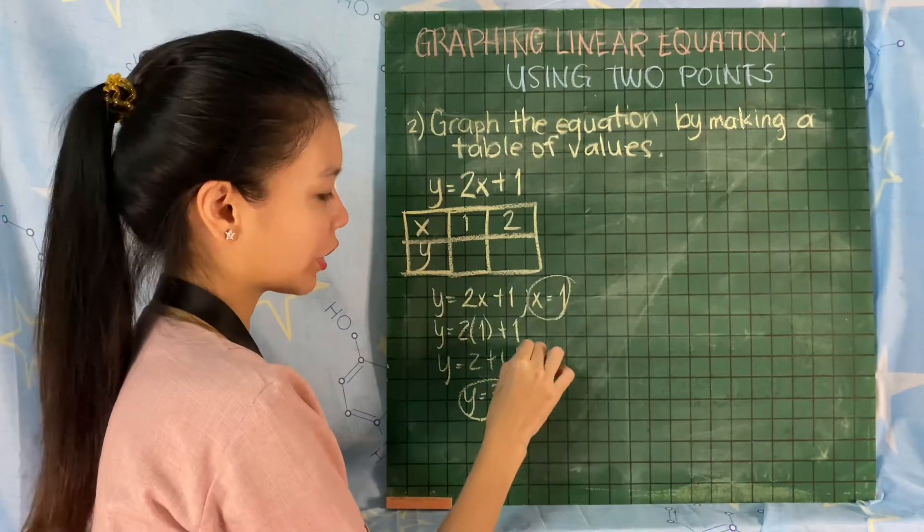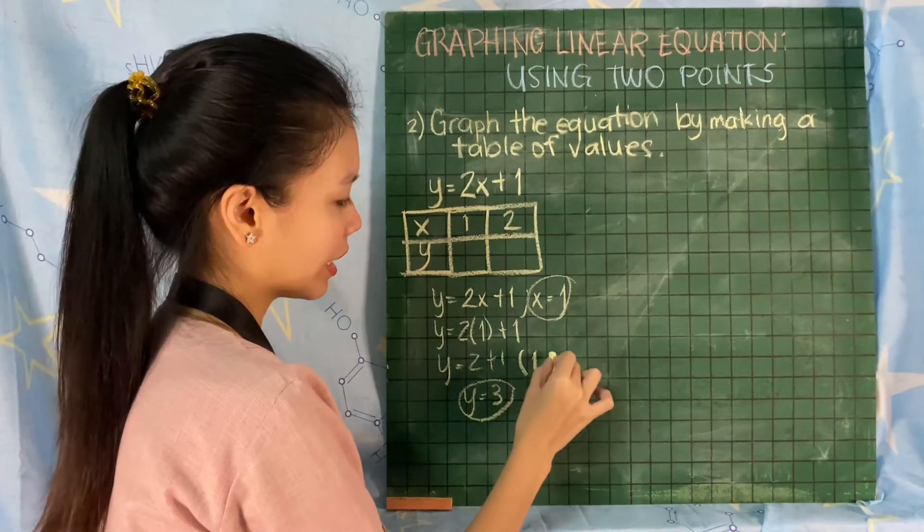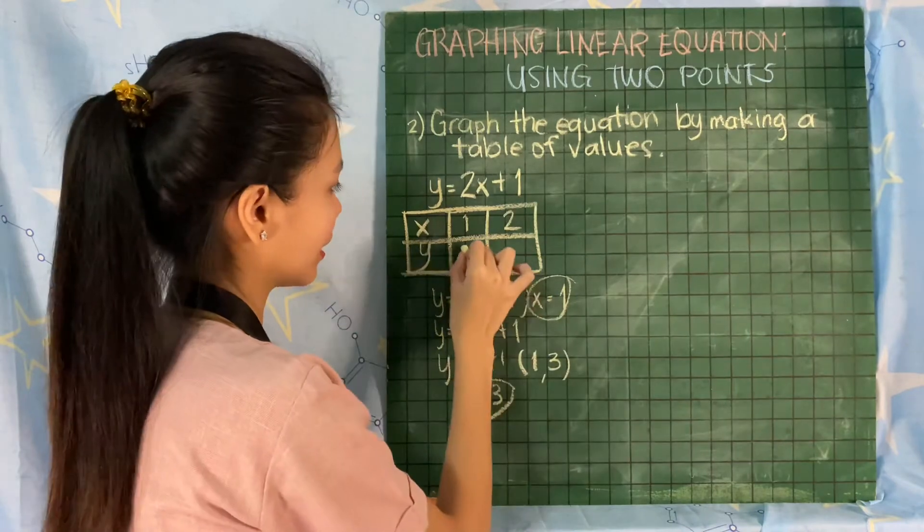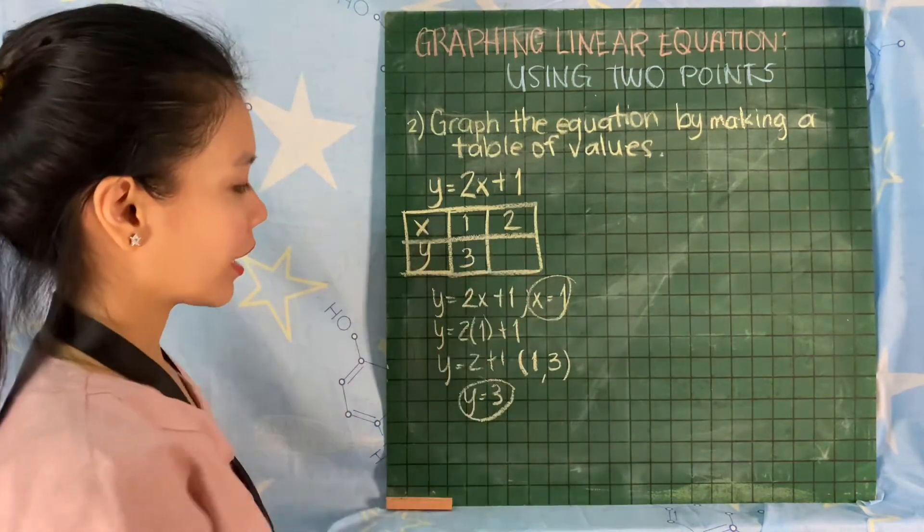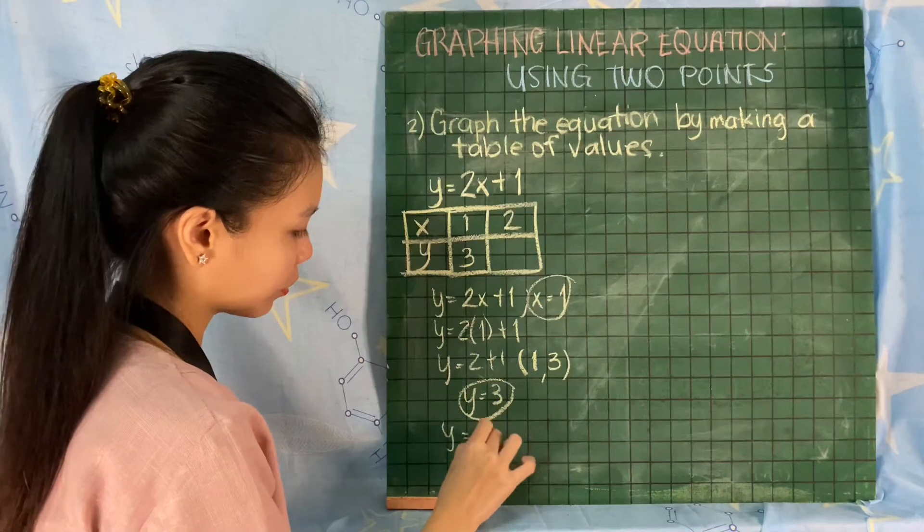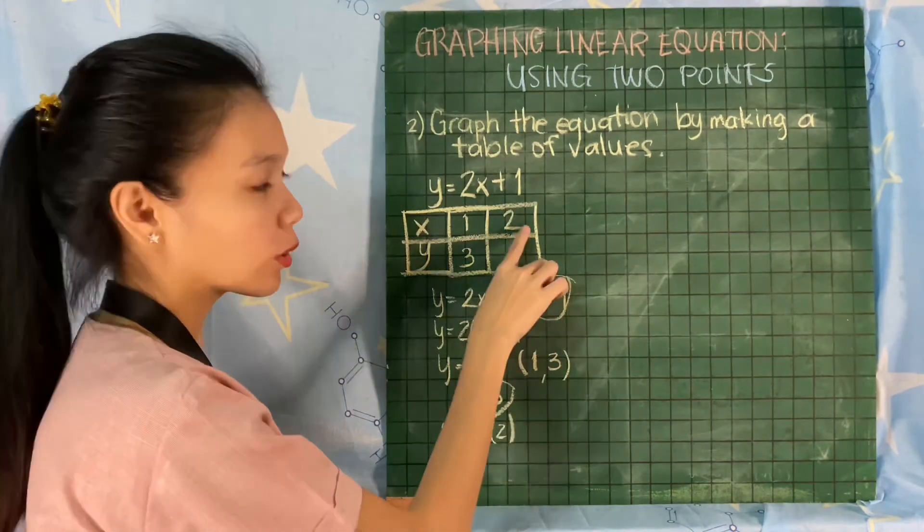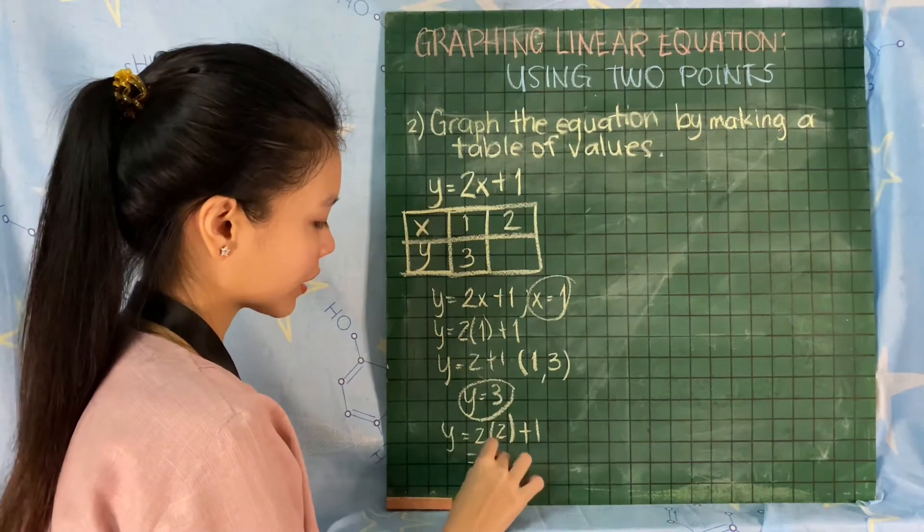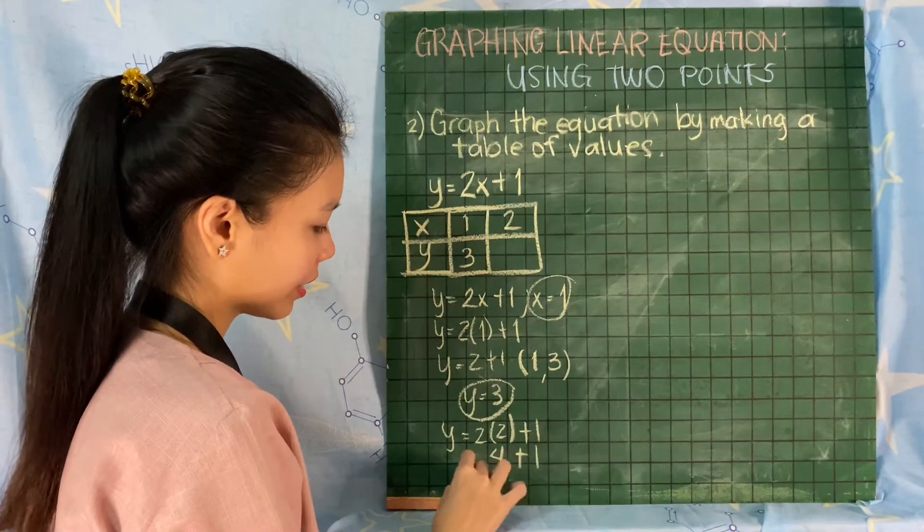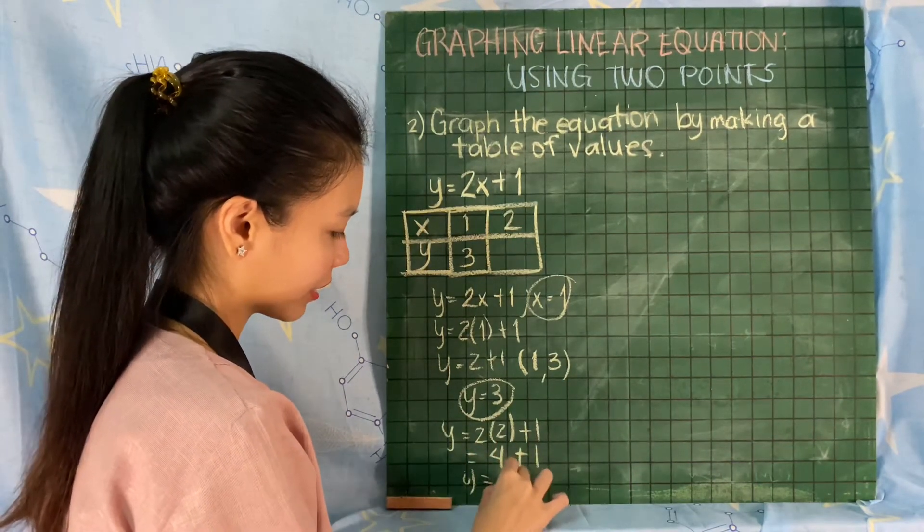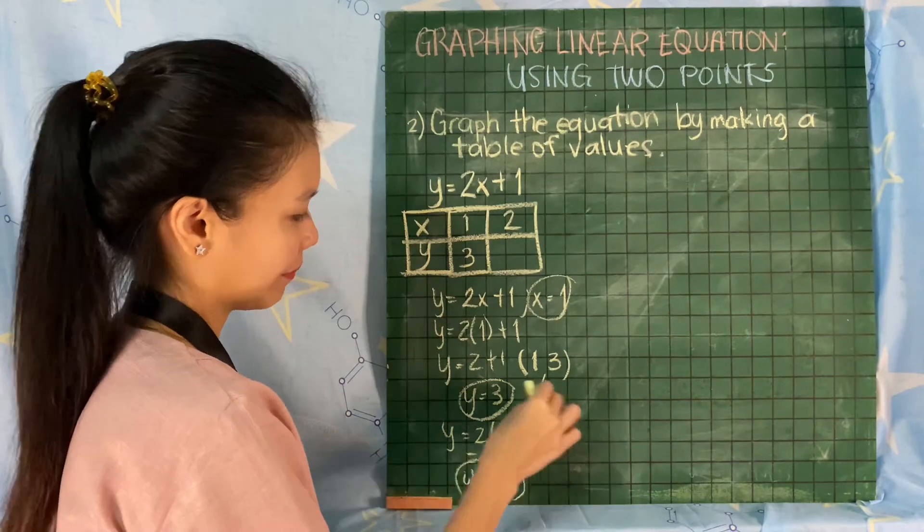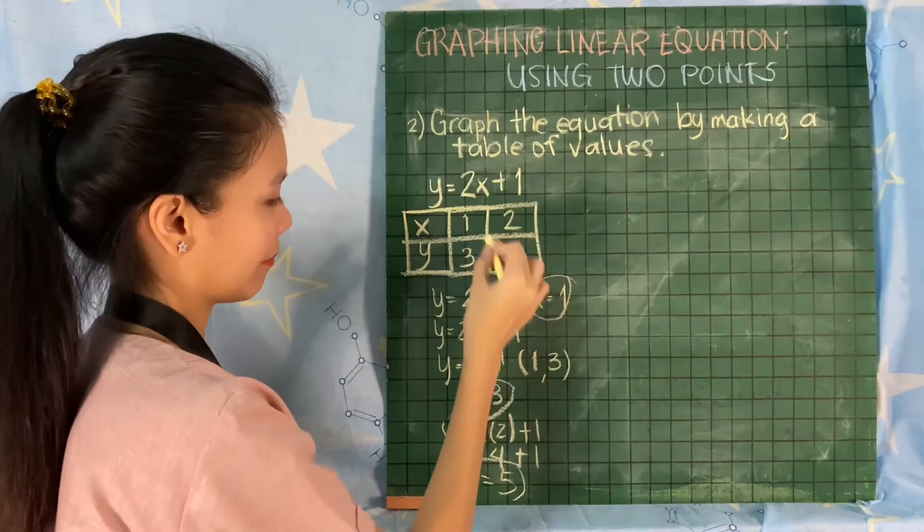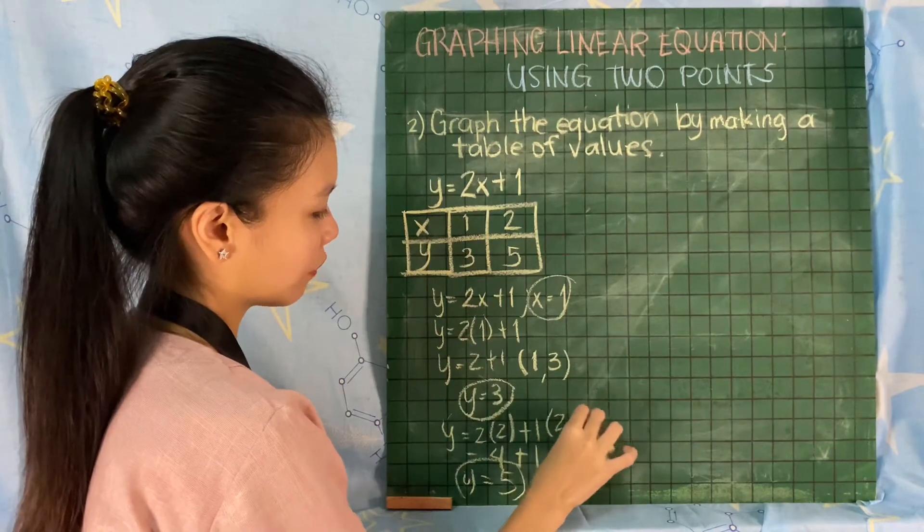So y = 3. Therefore, our ordered pair is x is 1 and y is 3. Then for the second one, we have y = 2 times 2, because that's the value of x, plus 1. 2 times 2 is 4 plus 1. What will be the value of y? That will become 5. The second ordered pair is (2, 5).